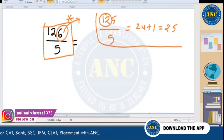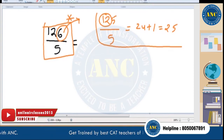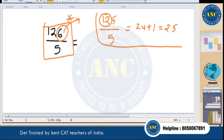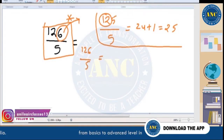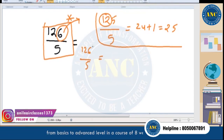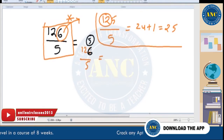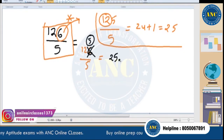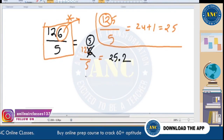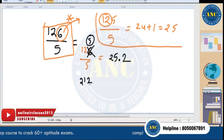For 126 ÷ 5: ignore the 6, treat it as 125 — answer is 25. The extra 1 (since 126 = 125 + 1) adds a decimal: 1/5 = 0.2, so answer is 25.2. For 212 ÷ 5: ignore the 2, treat as 210. 21 × 2 = 42, answer is 42.0 + remainder 2/5 = 42.4.